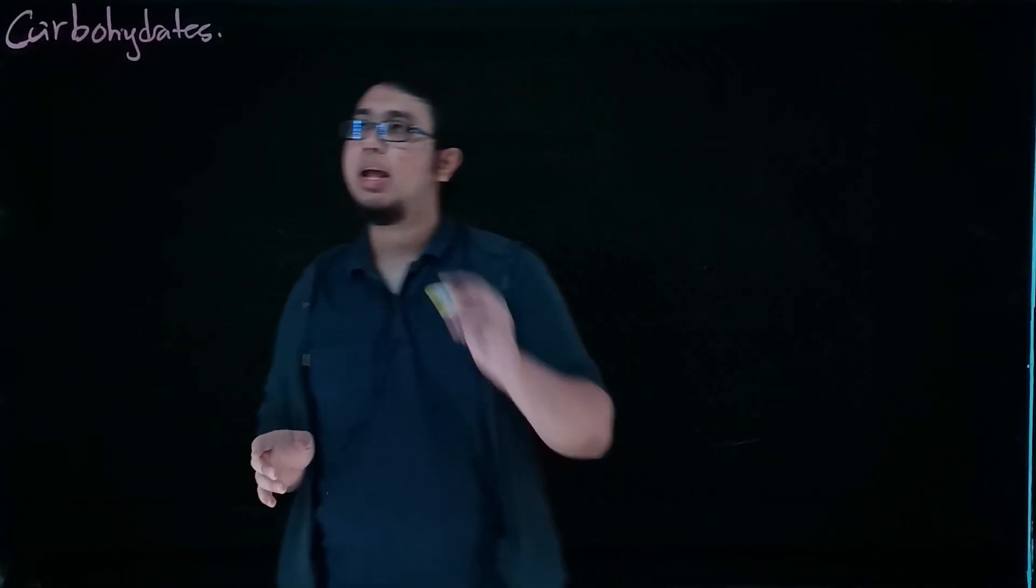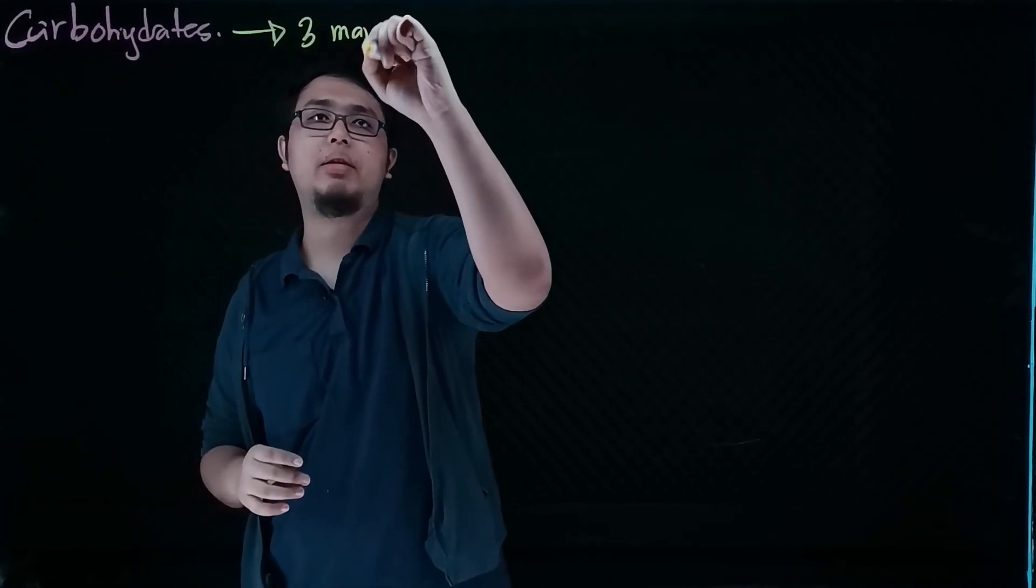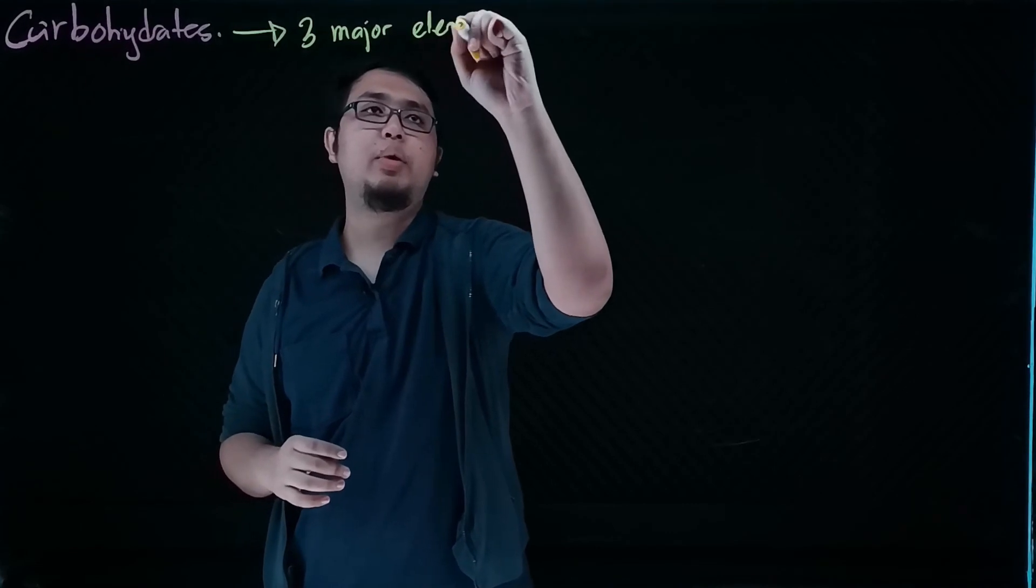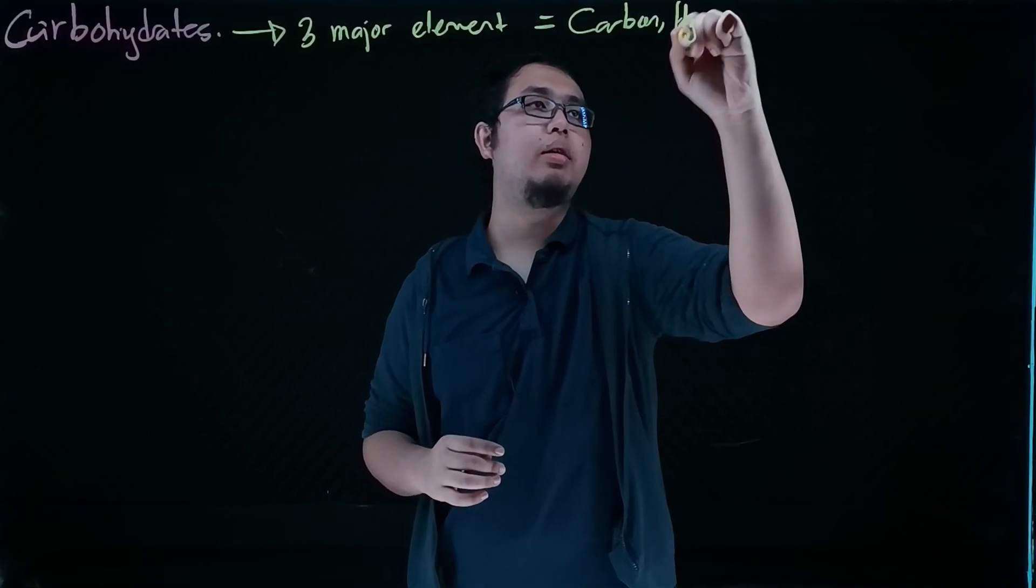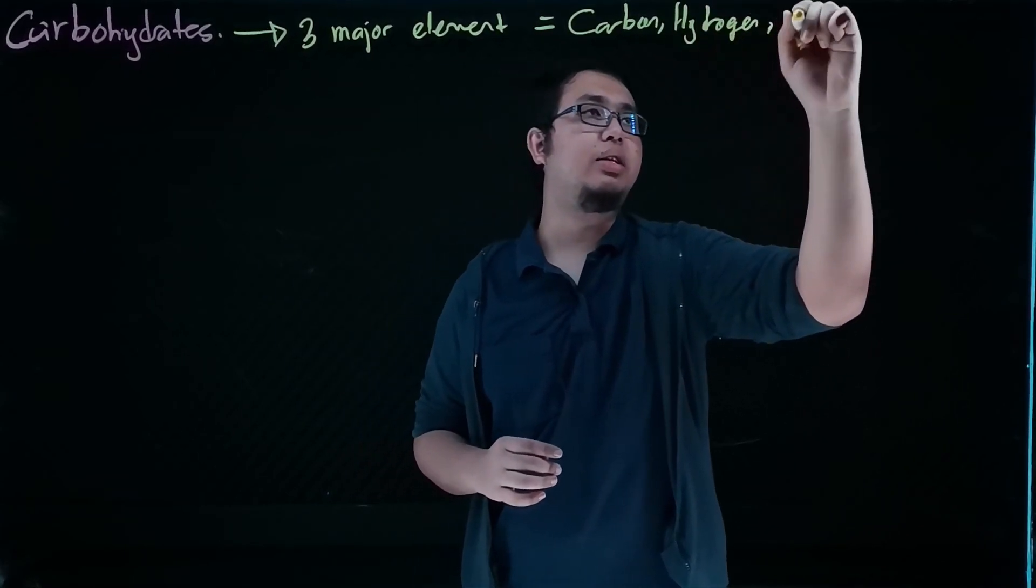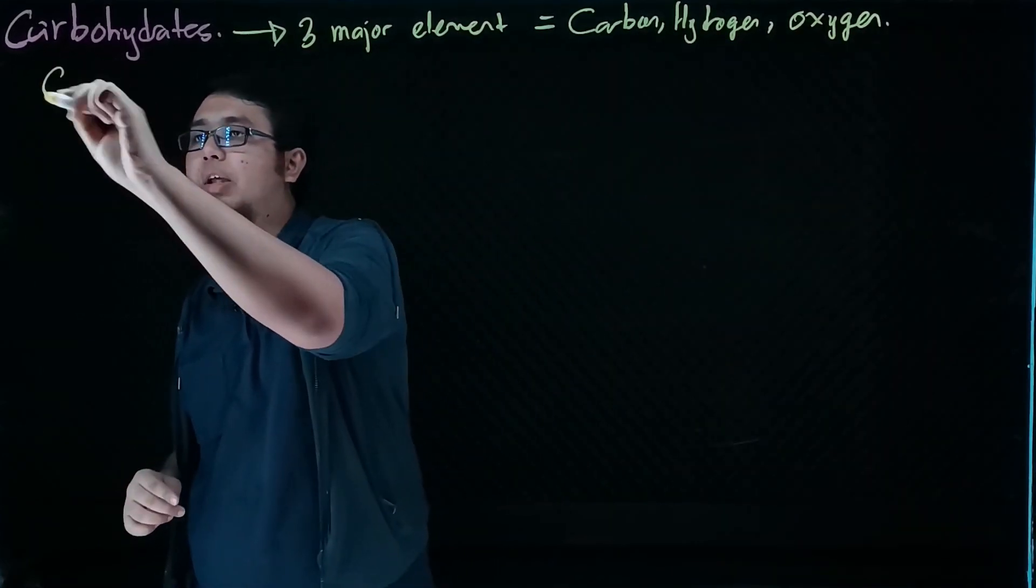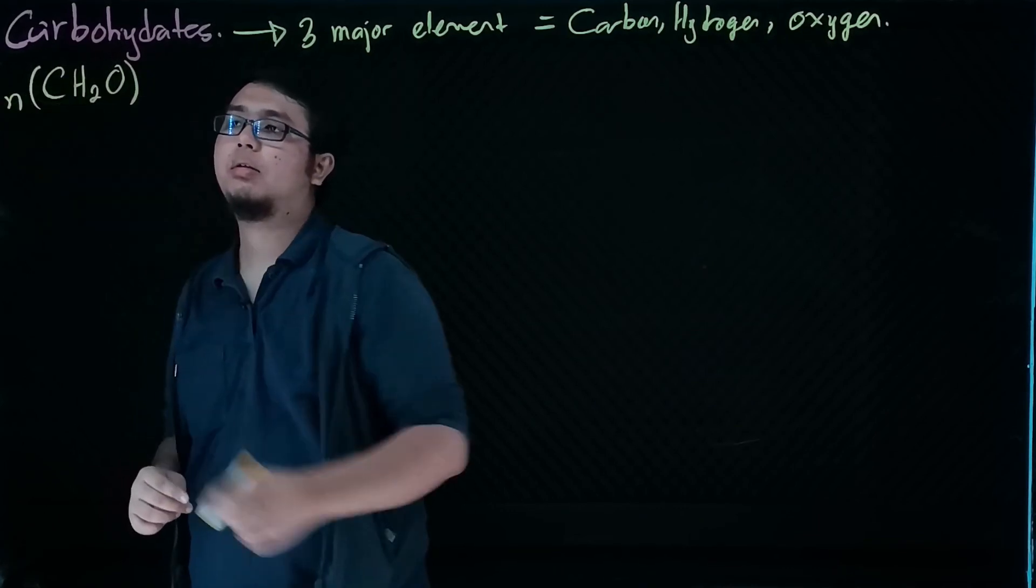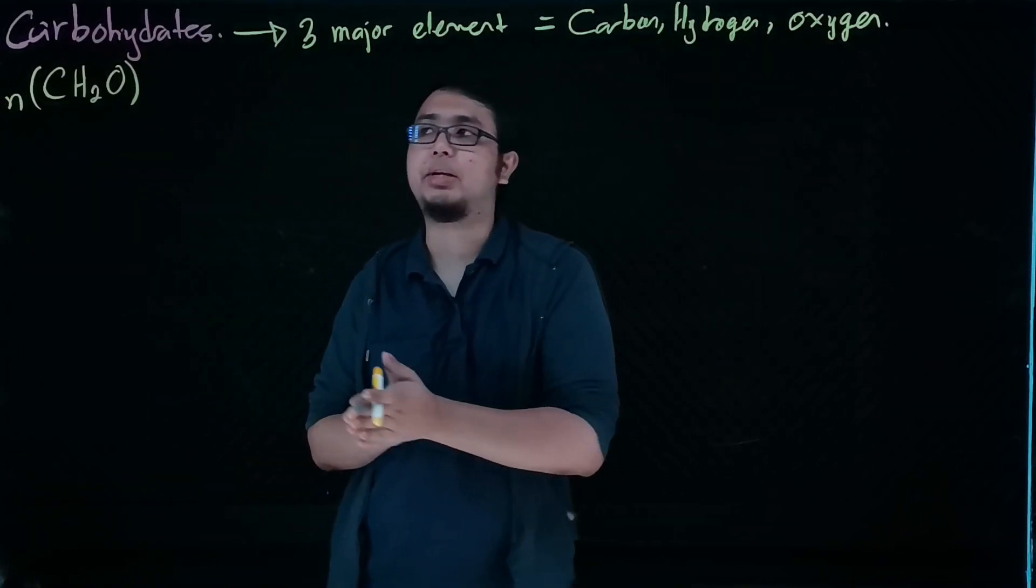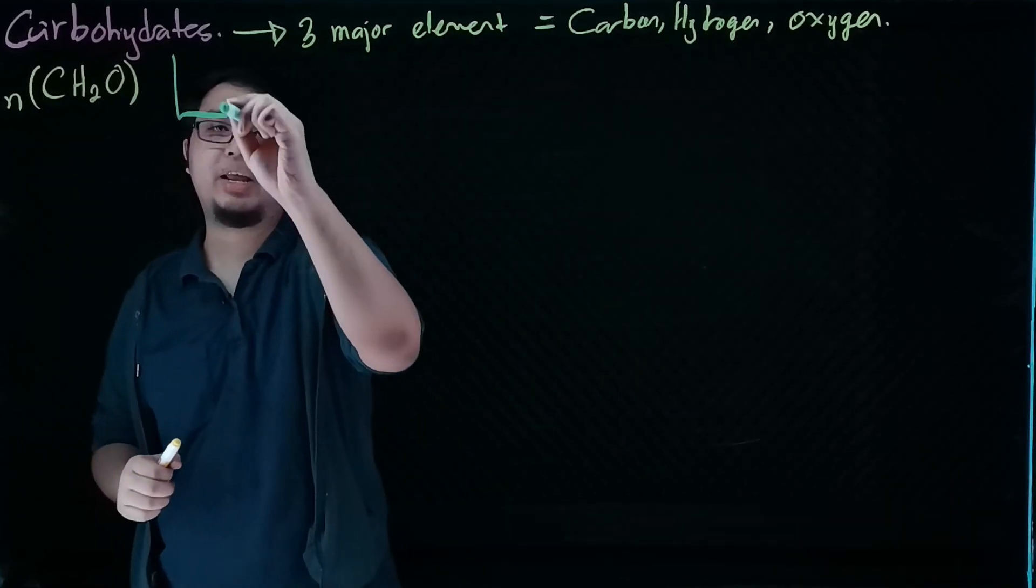Next, we're going to talk about carbohydrates. When we talk about carbohydrates, they are made up of three major elements: carbon, hydrogen, and oxygen. That's why most carbohydrates have this structure.